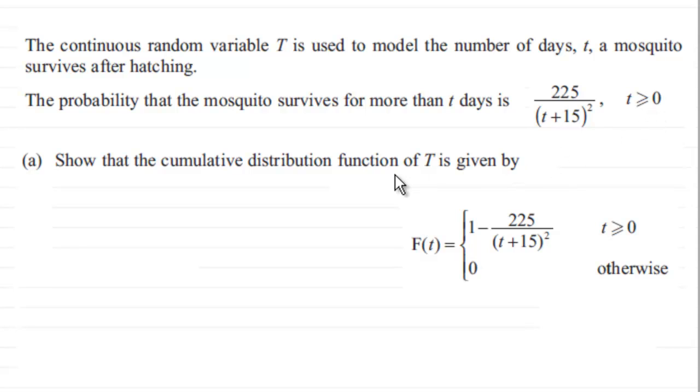And what we've got to do is show that the cumulative distribution function of T is given by F(t) = 1 - 225/(t+15)², and zero otherwise.